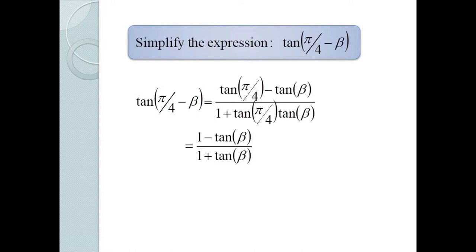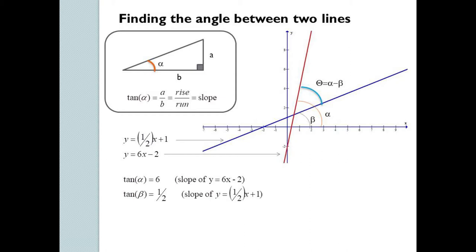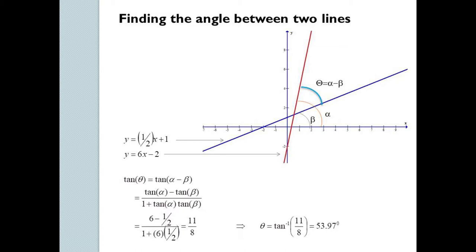A more practical application is finding the angle between two 2D lines. The slope of a line equals the tangent of the angle it makes with the x-axis. For lines y = 6x − 2 and y = ½x + 1, if α is the angle of the steeper line then tan α = 6, and if β is the angle of the other then tan β = ½. The angle θ between them is α − β, so tan θ = (6 − ½) / (1 + 6·½) = 11/8. Thus θ = arctan(11/8) ≈ 53.97°.